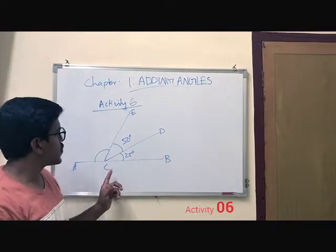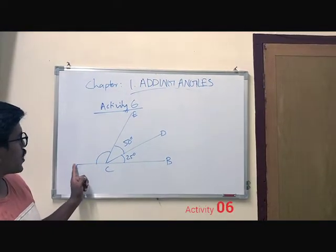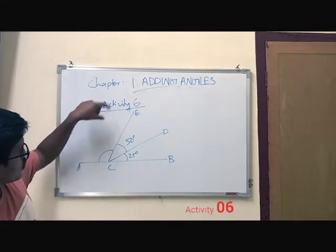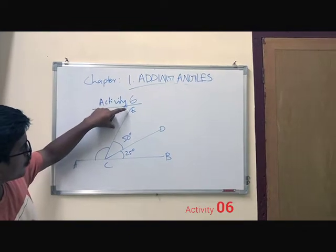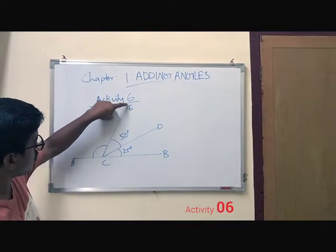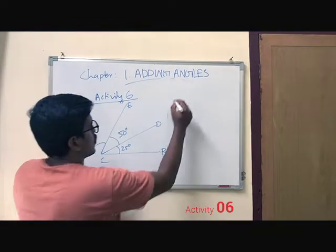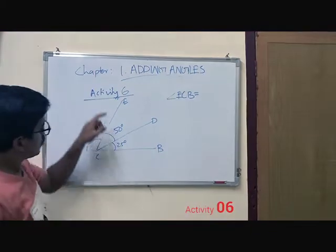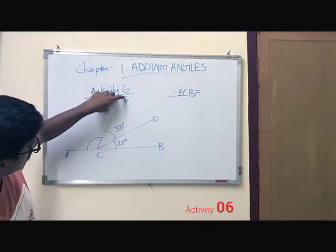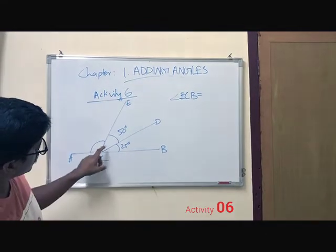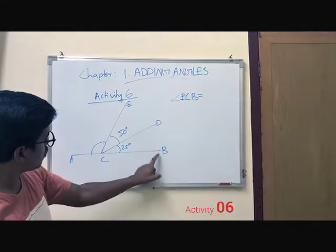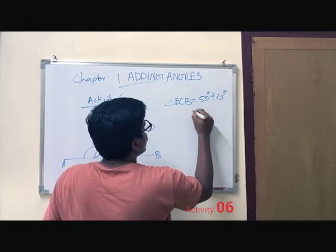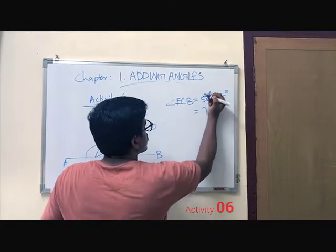In this activity, we have to find out the measurement of angle A, C, V. Before finding that, we have to find out the measurement of angle E, C, V. Angle E, C, V equals the sum of angle E, C, V and angle D, C, V — that is 50 plus 25 degrees, which is equal to 75 degrees.